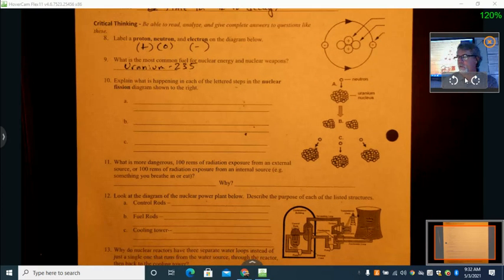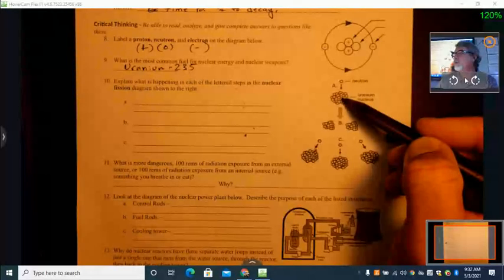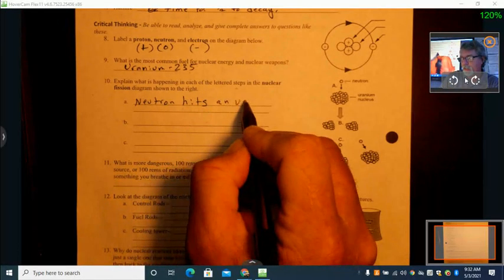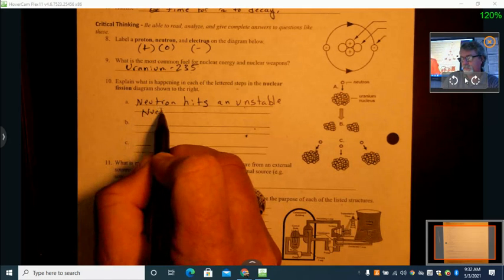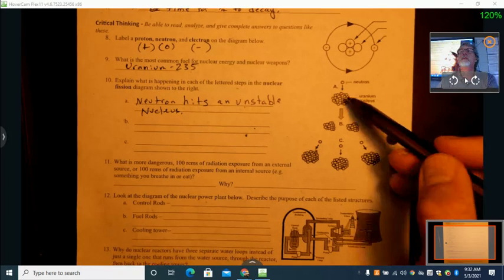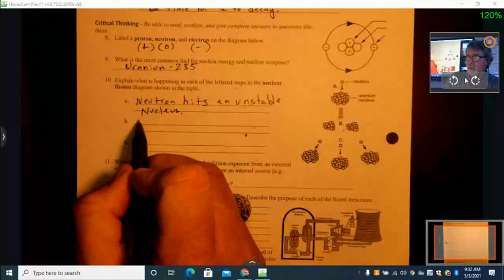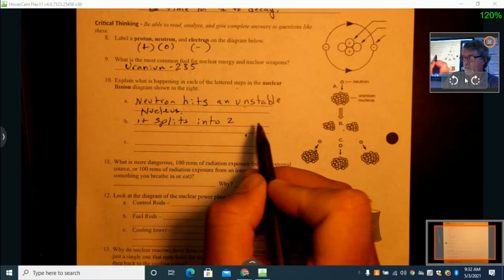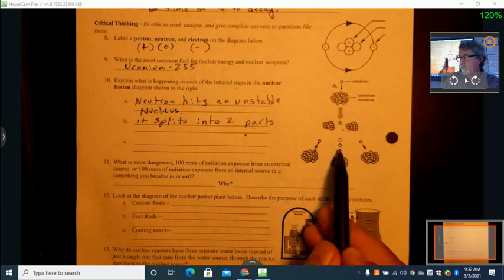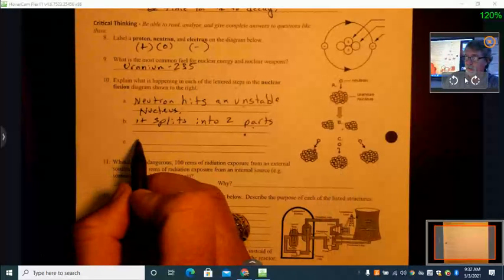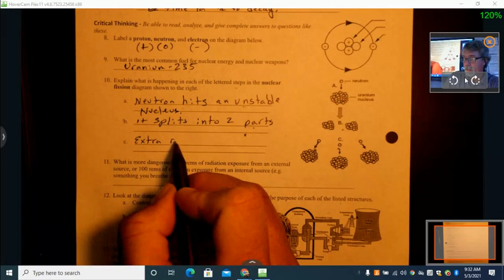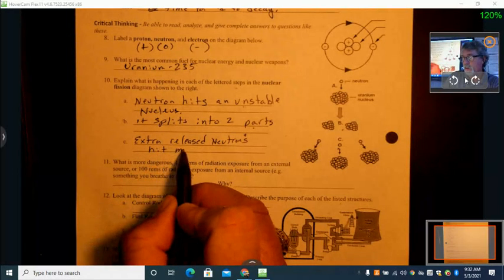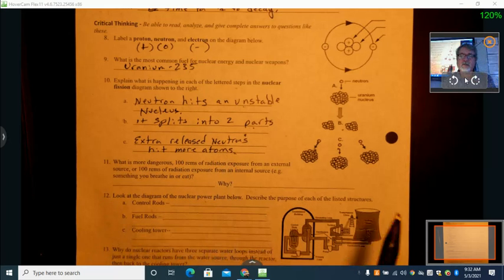All right, let's look at what's happening in this diagram here. So what do we see at letter A? We see a neutron crashing into an unstable nucleus. So neutron hits an unstable nucleus. And if it's already unstable, when we hit it with a neutron, it becomes even more unstable. Part B, it splits into two parts. And then part C, we have these little circles here, which are more neutrons released. So part C is extra released neutrons hit more atoms and cause them to split.